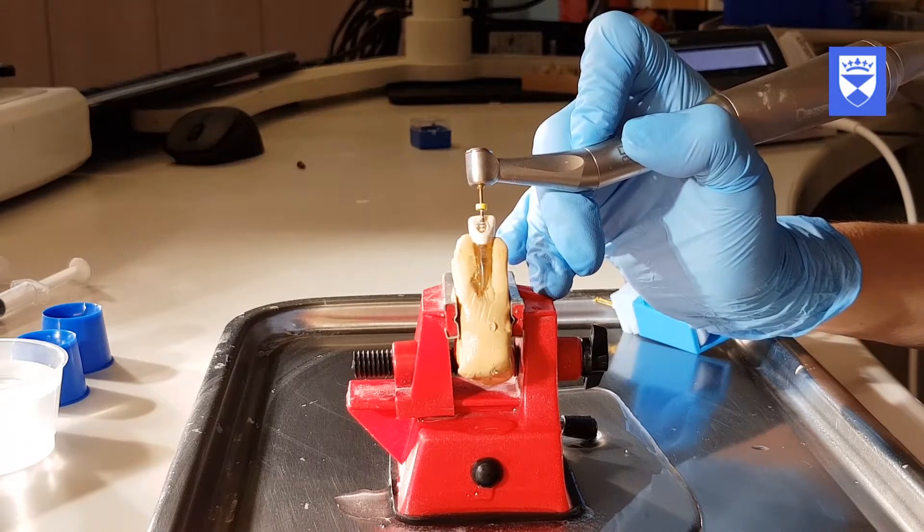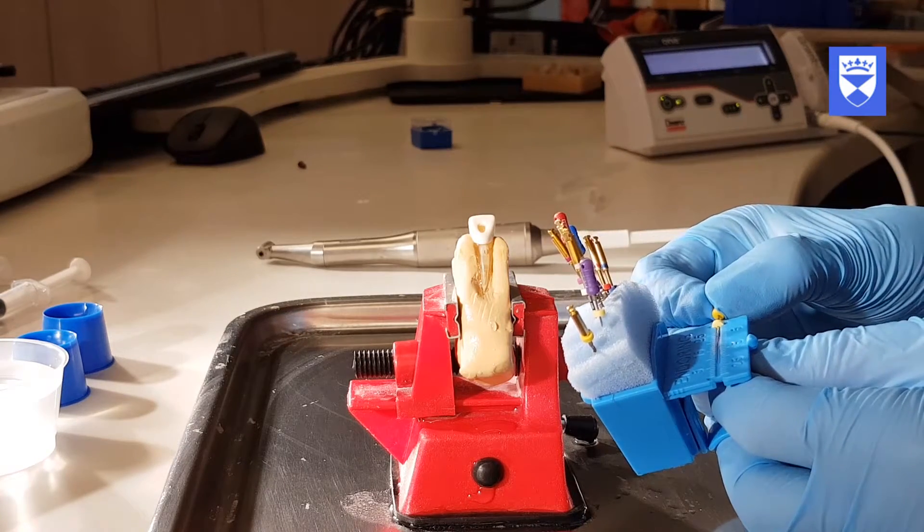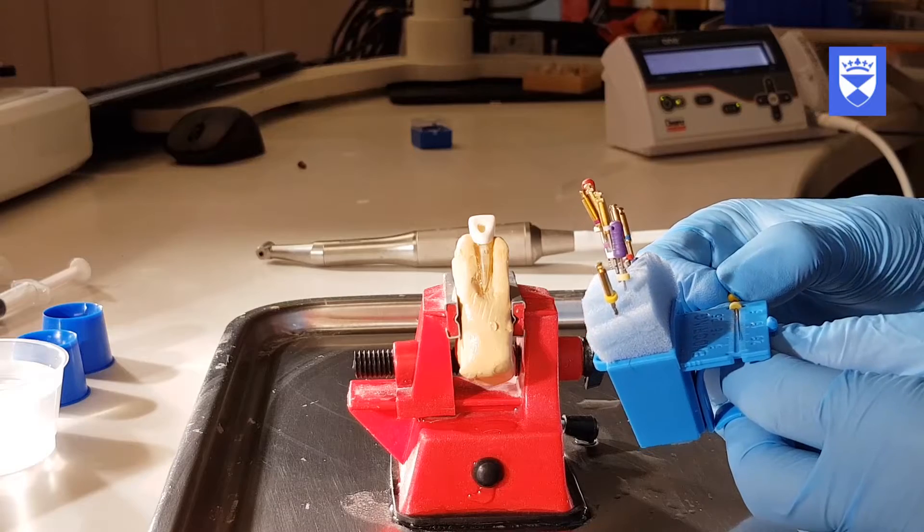A corresponding size flexofile is then used to gauge the apical constriction. If the file passes the apical constriction, move on to a larger finishing file.